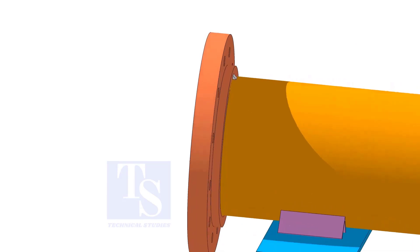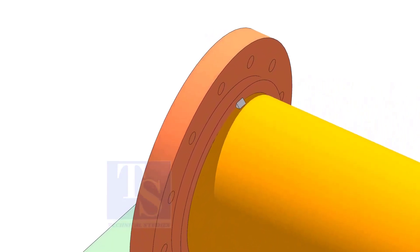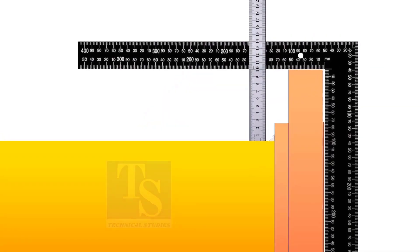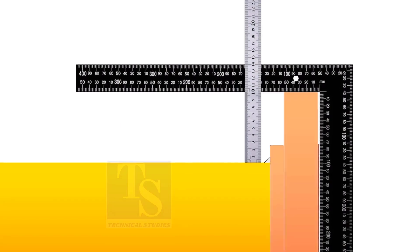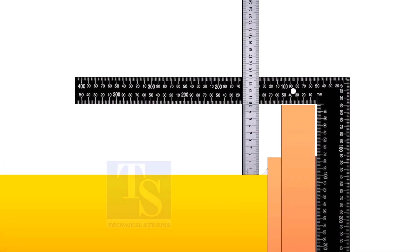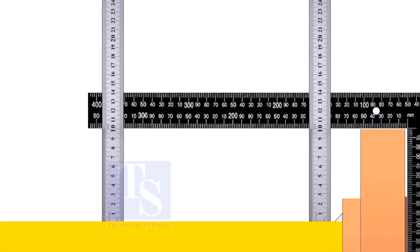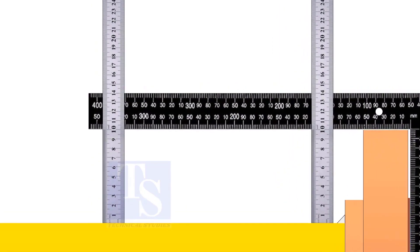Tack weld on the top side. Check the squareness of the flange face to the pipe. If the squareness is correct, tack weld in the bottom side.